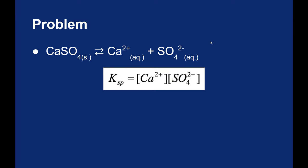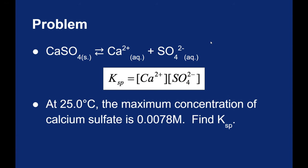So let's do a little math for this equilibrium that we've already discussed. At 25 degrees Celsius, the maximum concentration of calcium sulfate is 0.0078 molar. With that information, we should be able to find the Ksp.